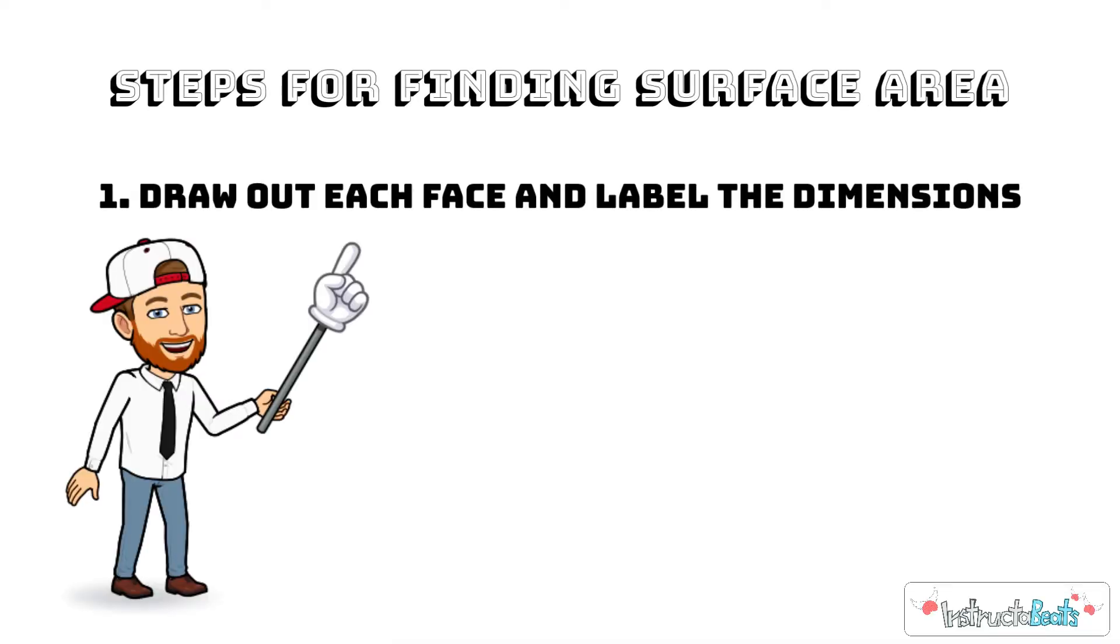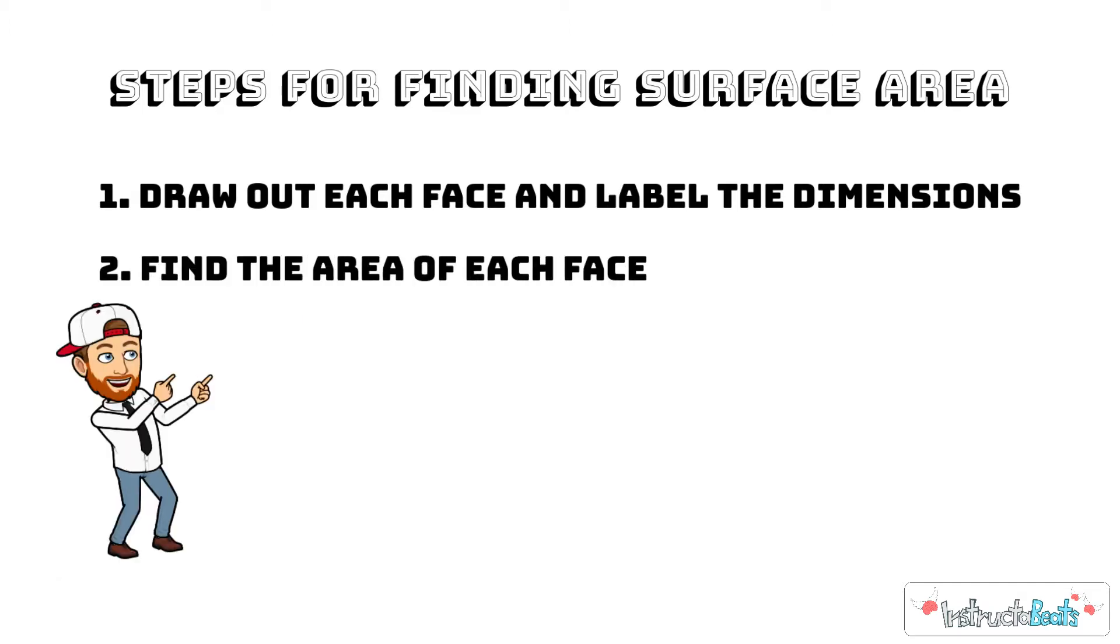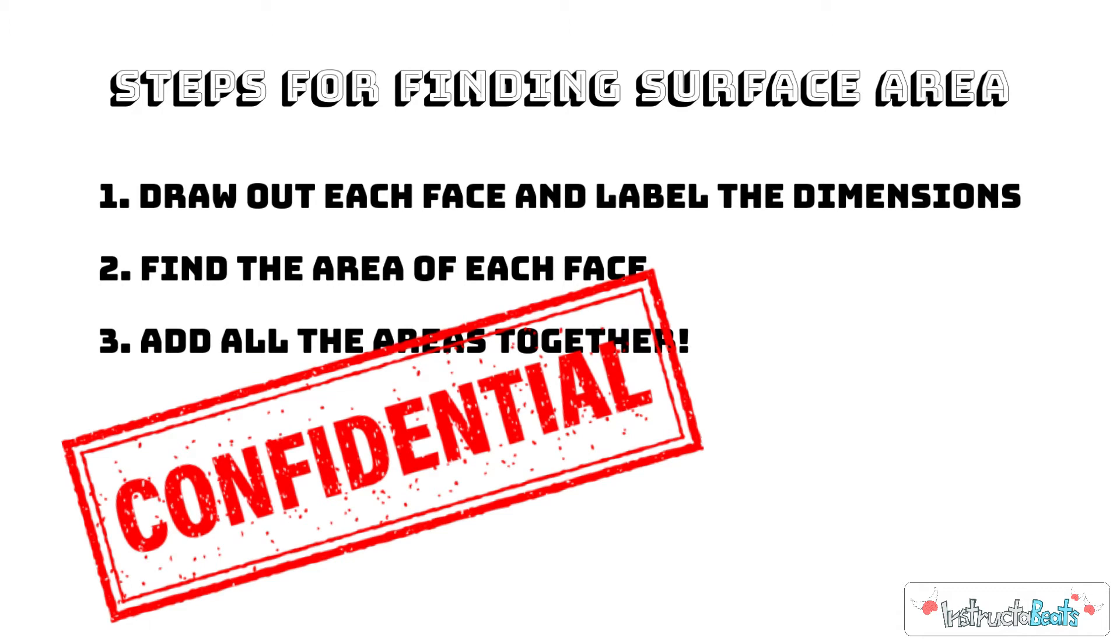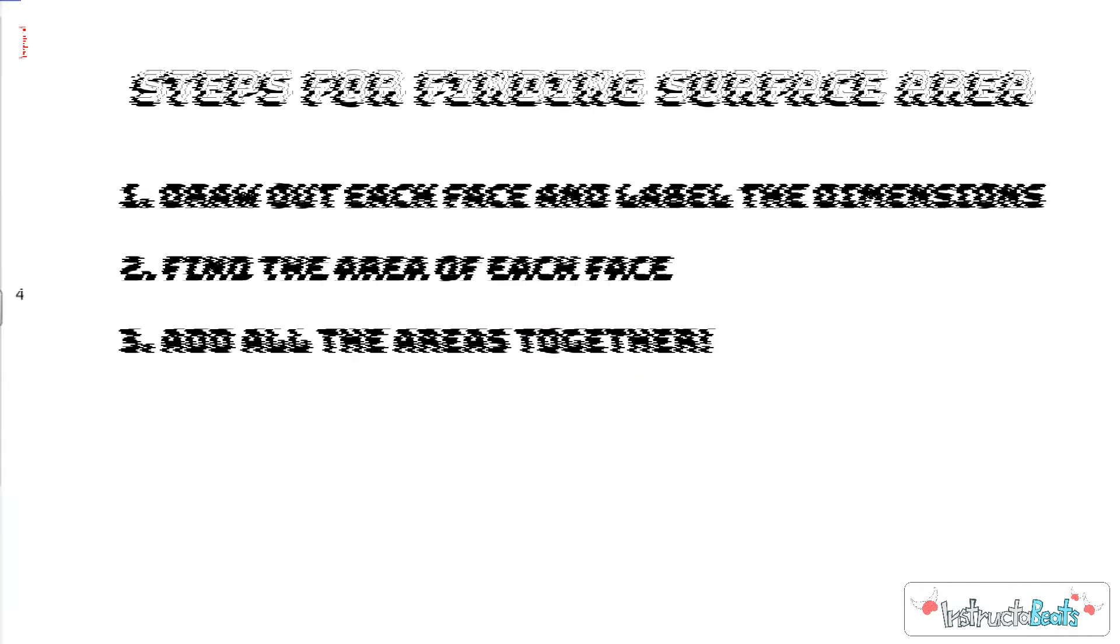Our steps for finding surface area: First, we're going to draw out each face and label the dimensions. Then we're going to find the area of each face, and then we're going to add up all those areas together. Let's take a look at these steps in action.